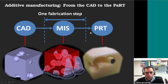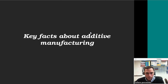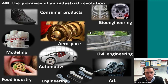And it is really weak dependence on the fabrication tool. Here are some of the key facts, the main features of additive manufacturing. One of the most striking things in additive manufacturing is that it can be applied to almost everything. You can see different applications in the area of consumer products, in bioengineering, in aerospace, in car industry, in any different area of engineering.